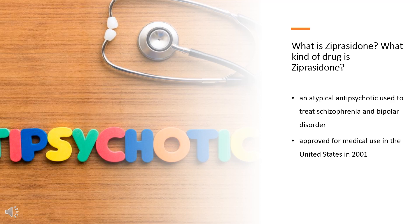Ziprasidone, sold under the brand name Geodon among others, is an atypical antipsychotic used to treat schizophrenia and bipolar disorder. It may be used by mouth and by injection into a muscle. The IM form may be used for acute agitation in people with schizophrenia.